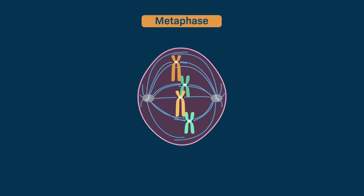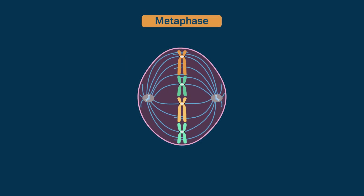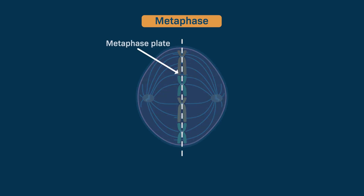During metaphase, the kinetochore microtubules arrange the chromosomes so that they line up along the metaphase plate. Think of the metaphase plate as an imaginary plane that is halfway between the spindle poles.